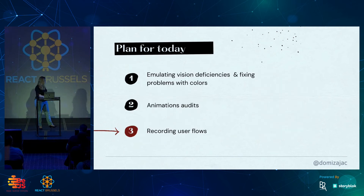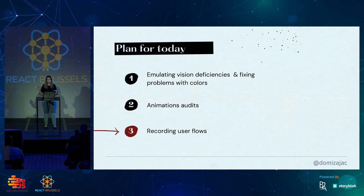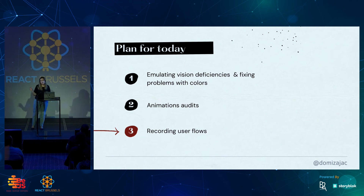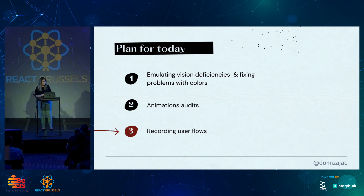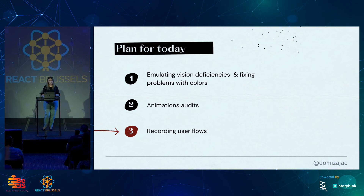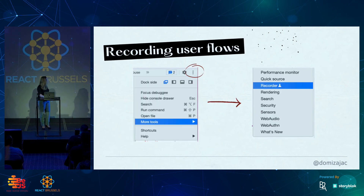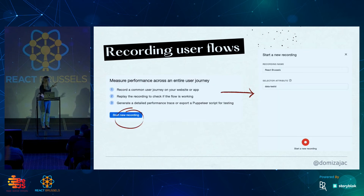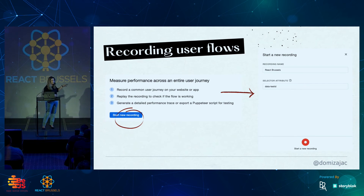The last thing I want to show you is recording user flows. If you've ever received a bug report with reproduce steps like: click, fill the form, find three fields, add something at the end, and so on — you will like this. It helps us record a user flow, replay it, slow it down, debug, and more. To get there: More Tools, Recorder tab, Start New Recording. You can add a name, add a selector attribute if needed, and start recording.